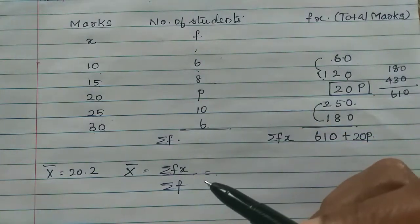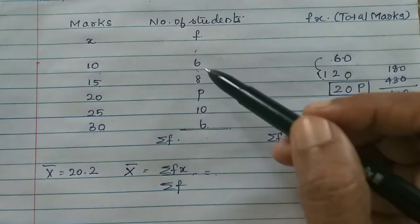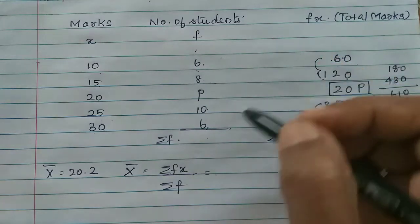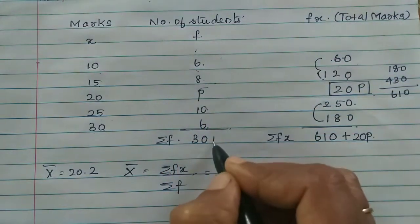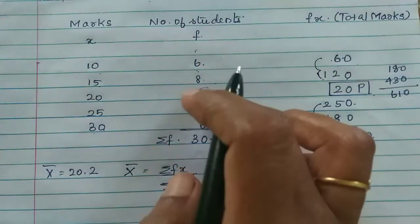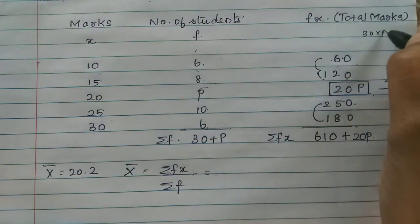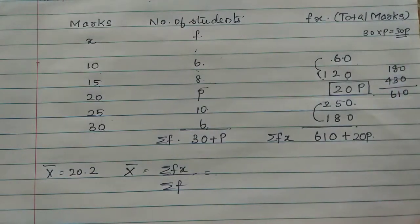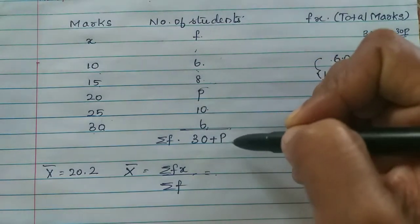Sigma f means number of students. If you add all these: 10 plus 6 is 16, plus 6 is 22, plus 8 is 30. So 30, plus P. So 30 plus P.